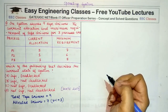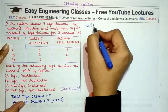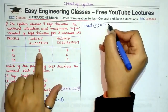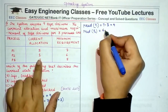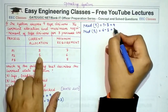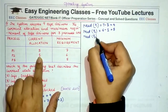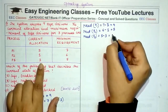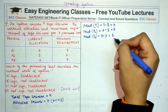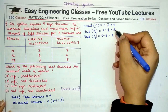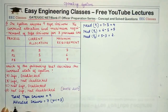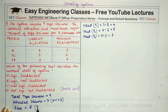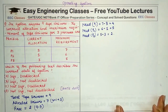The need of each process is its maximum requirement minus its current allocation. Need of P1 = 7 − 3 = 4. Need of P2 = 6 − 1 = 5. Need of P3 = 5 − 3 = 2. So P3 needs two more tape drivers, P2 needs five more, and P1 needs four more. Free tape drivers = 9 − 7 = 2.